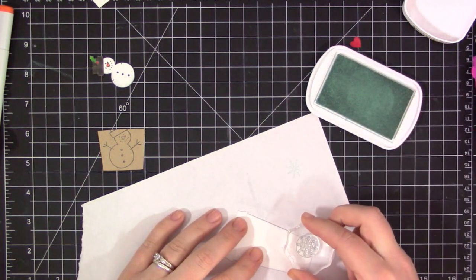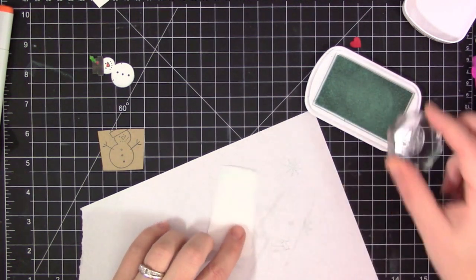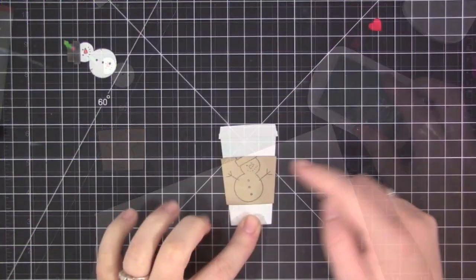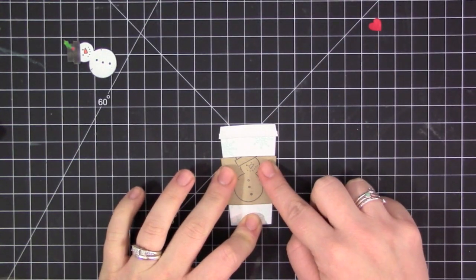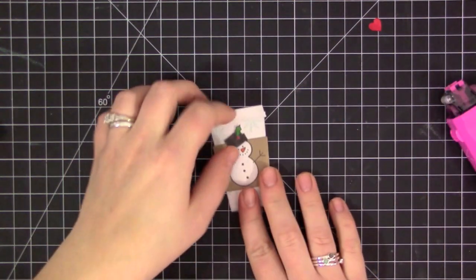So now to dress up the cup a little bit, because it is pretty stark white and I wanted to give it a little bit of detail rather than just have the plain white, I used a gray Copic marker and added some highlights to the edge of the cup. And then I also stamped on some snowflakes with Snow Cone dye ink.